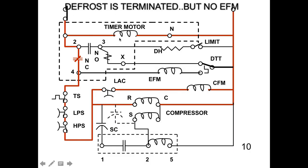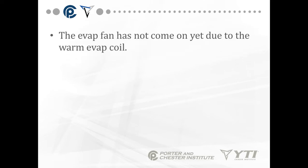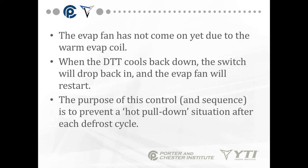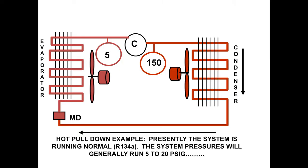When the single pole double throw DTT senses the evaporator coil is warm enough, it will switch up to the top circuit, completing the path to the clutch or termination solenoid on the defrost time clock. The solenoid will swap the contacts back into refrigeration mode. In other words, there's no waiting for the time delay. We actually force the system back into cooling mode. Now the defrost is terminated, so we're back in cooling mode. 2 to 4 is closed. 2 to 3 is open. My compressor is now running. But notice my EFM has not started to run yet. That's because the DTT senses the coil is still warm.